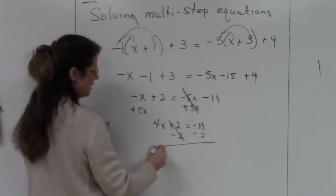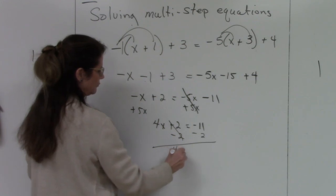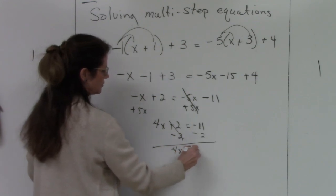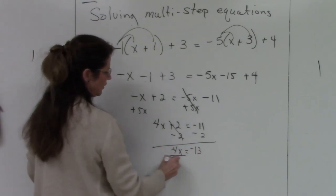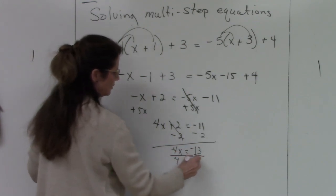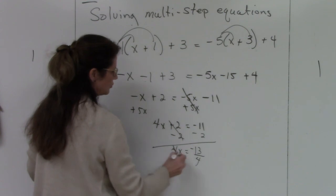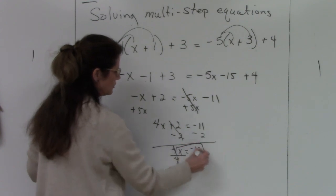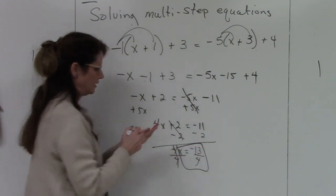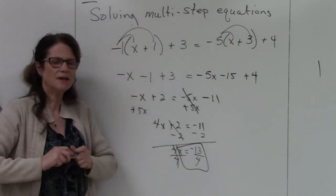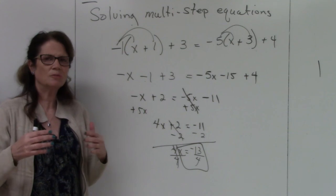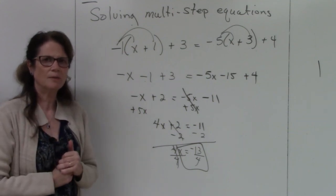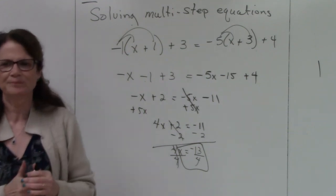Subtracting 2 from both sides: 4x equals negative 13. Divide by 4, so x equals negative 13 fourths. I hope you're seeing that it's the same steps over and over again — it's just a matter of keeping track of your steps.